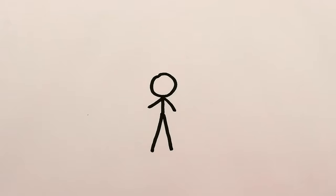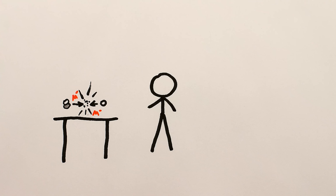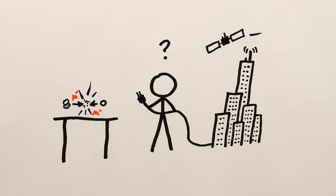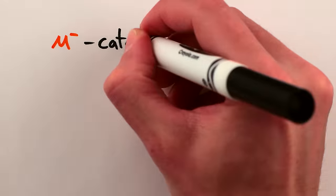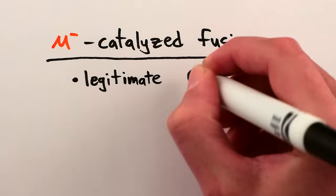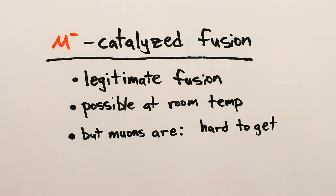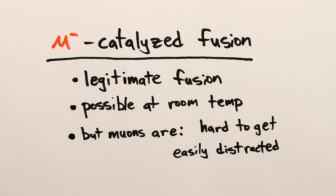So at this point, you're probably asking yourself, if room temperature nuclear fusion exists, why aren't we using it to power modern civilization? Well, while muon-facilitated fusion is indeed fully legit nuclear fusion at non-crazy temperatures, there are some major problems which prevent it from being used as a power source.